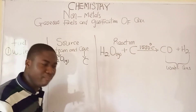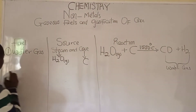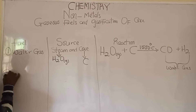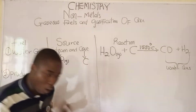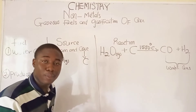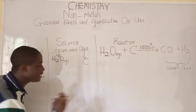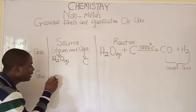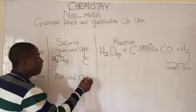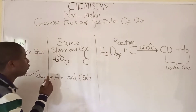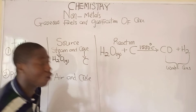Now let's move to the other gaseous fuel called producer gas. Producer gas is formed by reacting air and coke. Air is a mixture of gases with various components.